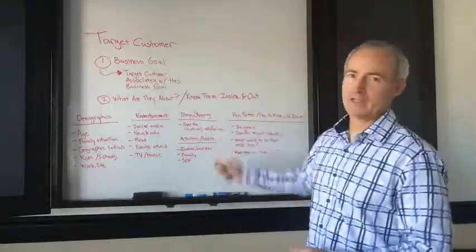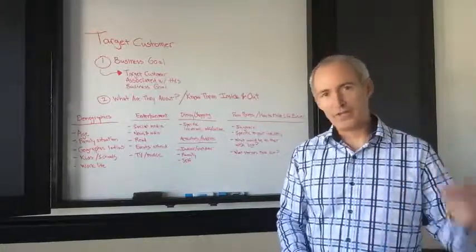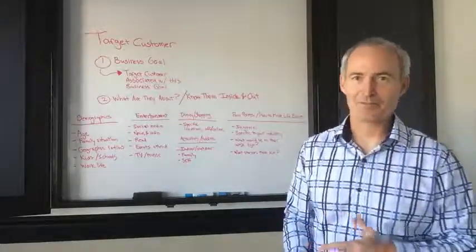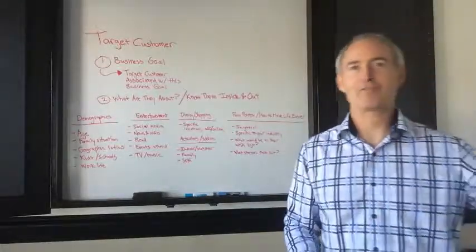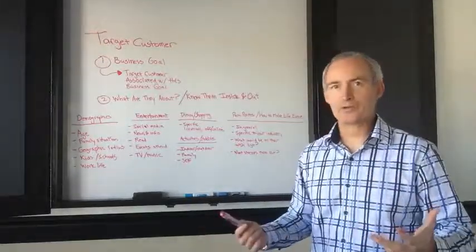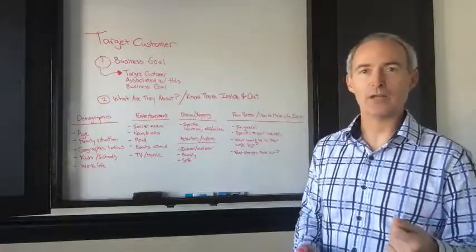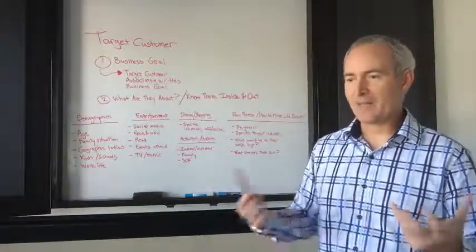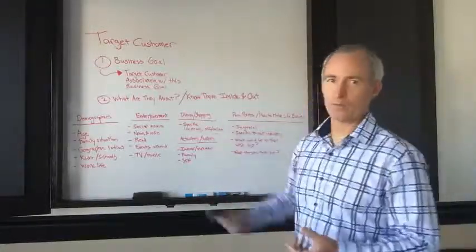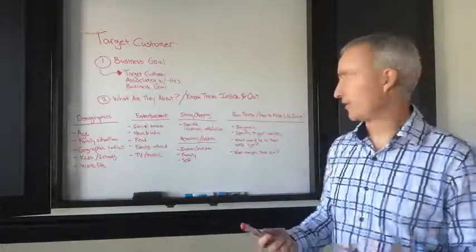The second category is dining and shopping. This is all about knowing specifically where they go to dinner, where they shop, and how they shop. Do they use Amazon for certain things and go to Target for others? Do they go downtown for certain things? What are their shopping habits and how do they shop online? What makes up their mix of stores? Where do they go on date night? Where do they take the kids?